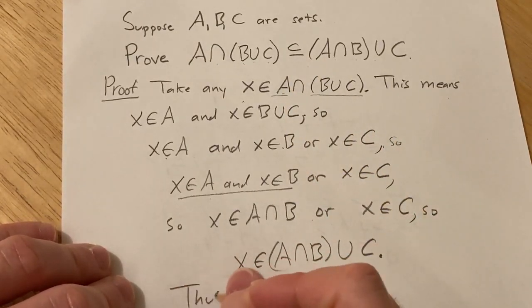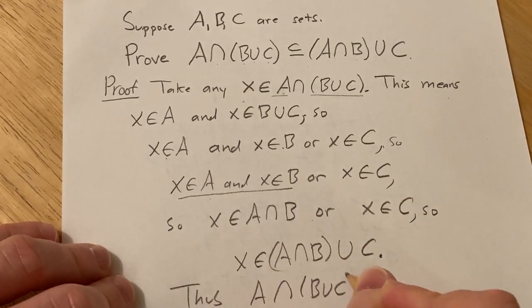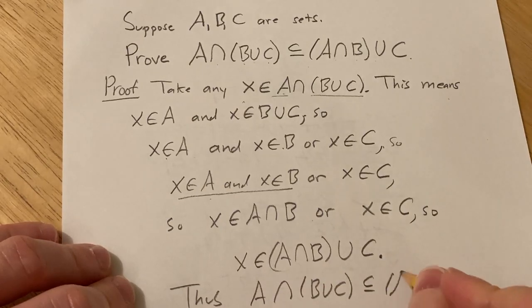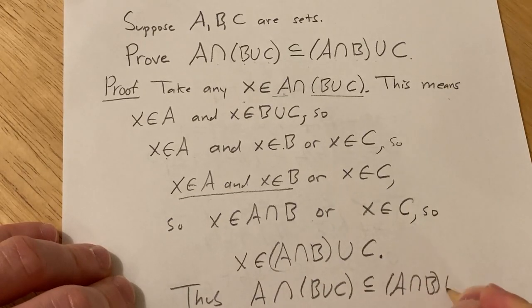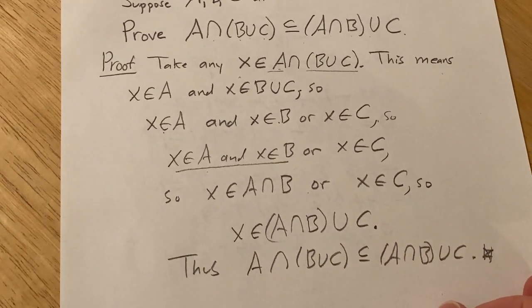So thus, A intersected with B union with C is a subset of A intersected with B union with C. And that completes the proof. I hope this video has been helpful. Good luck.